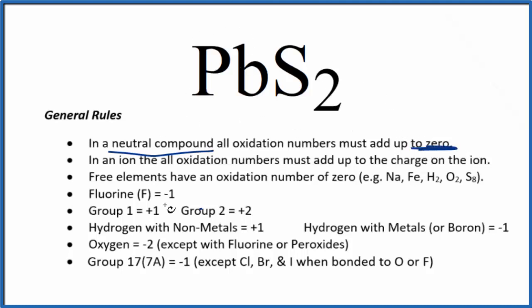Next, we won't see lead here in our list. It's a transition metal and it can have different oxidation states depending on what it's bonded to. We don't see sulfur here either, but when we have a binary compound like this, we'll take the more electronegative element and use the charge on that like it was an ion.